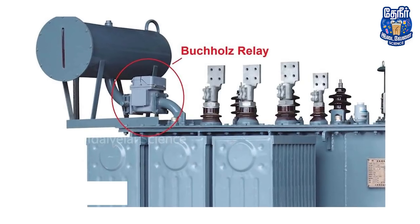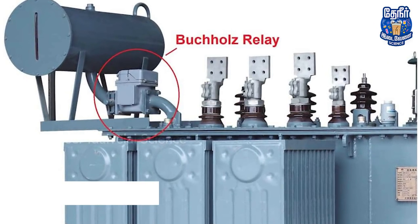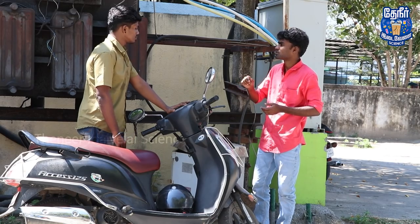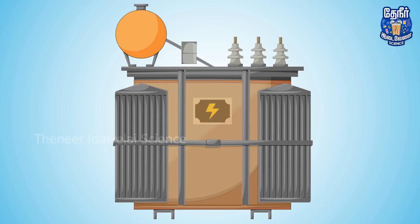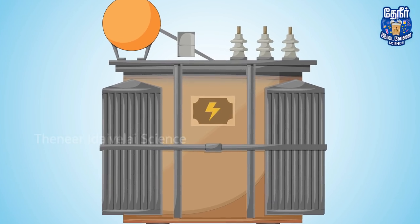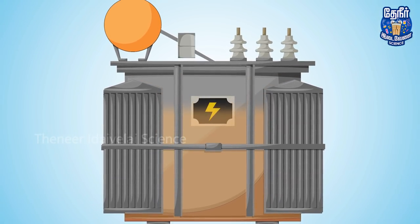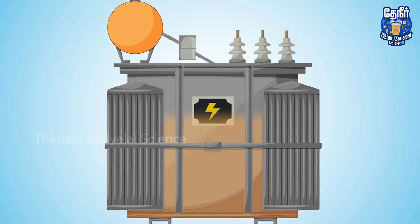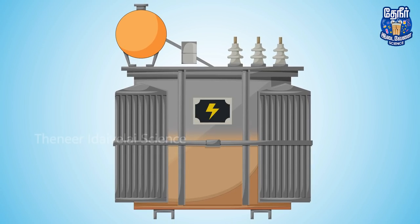If you have bushings, you can use it as well. If you have a transformer, you can use it as well. What do you think about the transformer? If you don't have a transformer like this, we need to save the transformer. When you have oil, we will save the transformer. That's why the oil is reduced. If you have a conservator tank, we can go with the transformer.